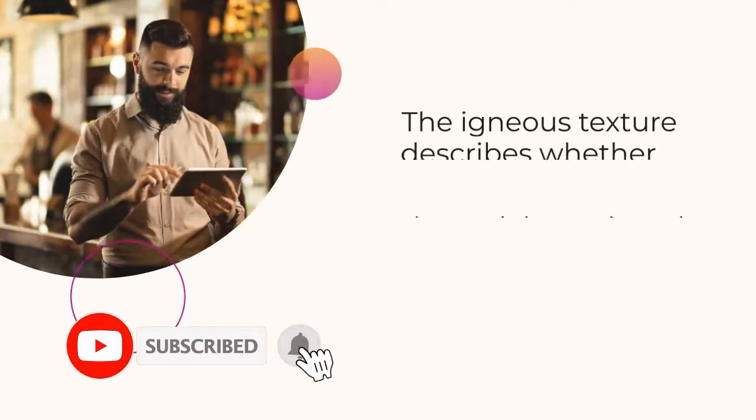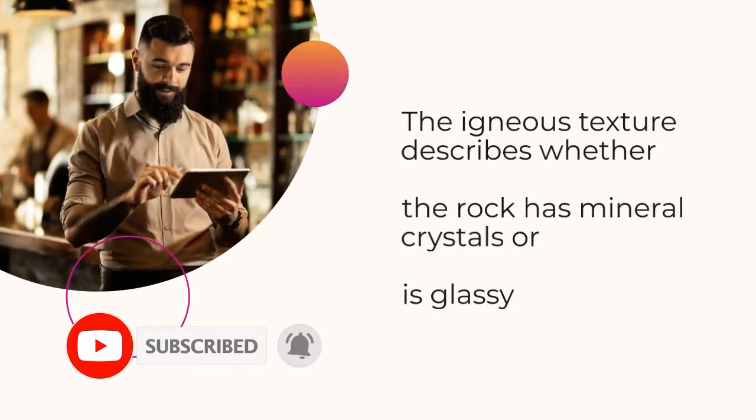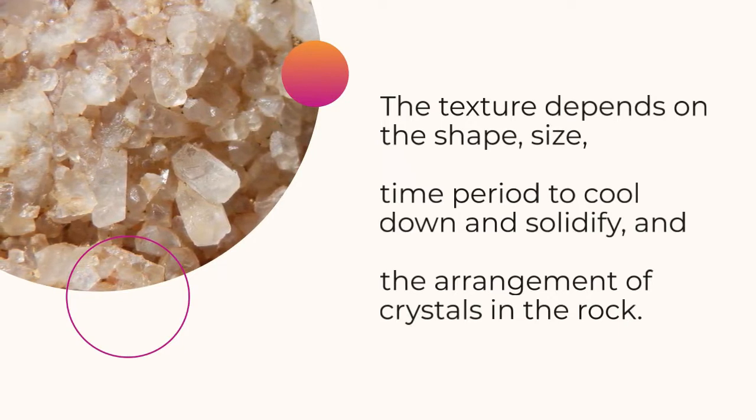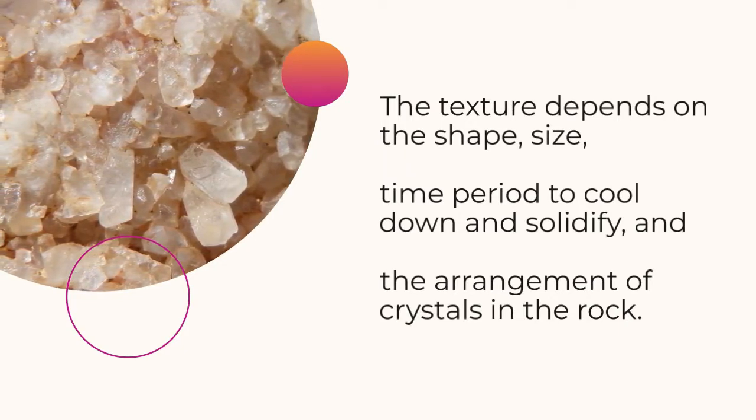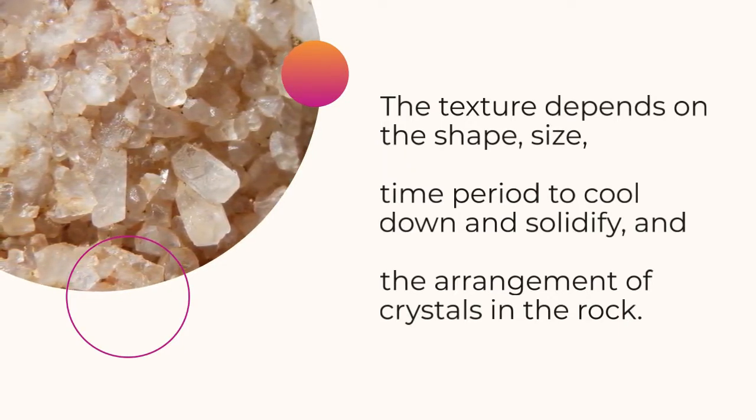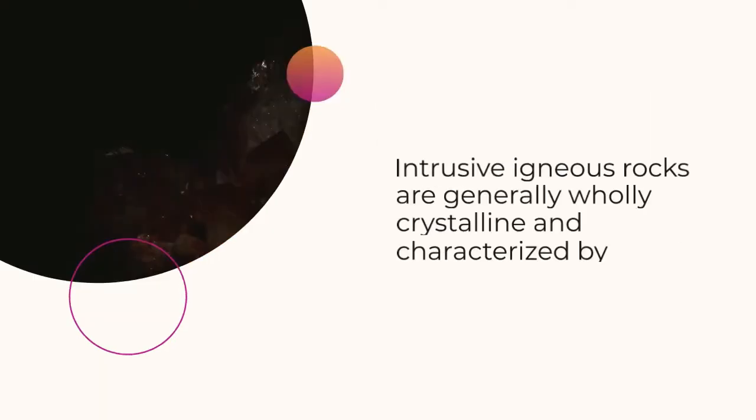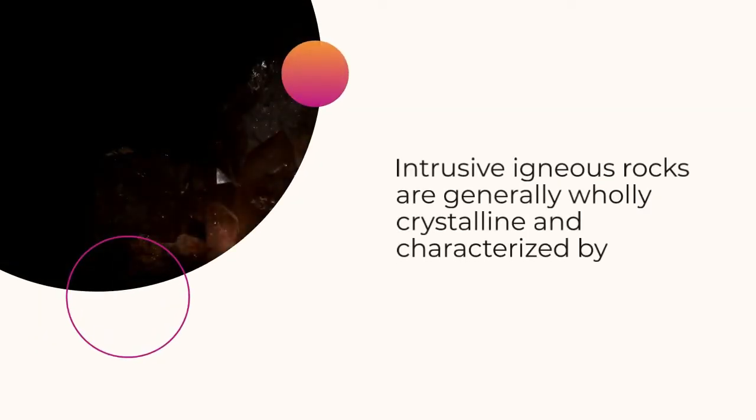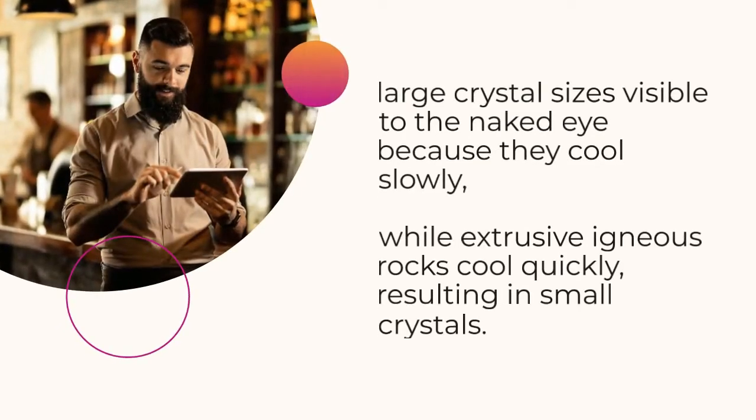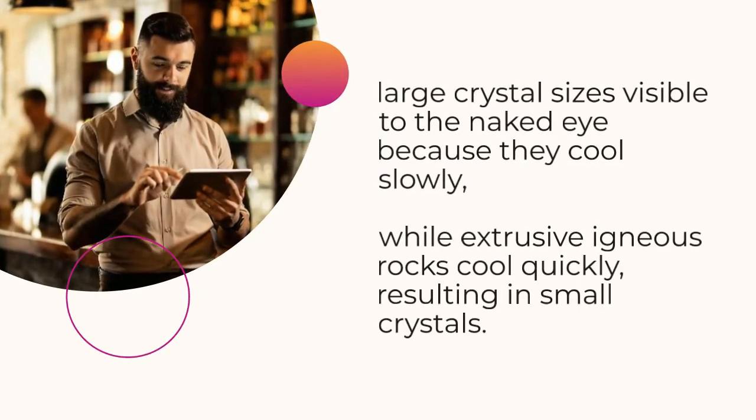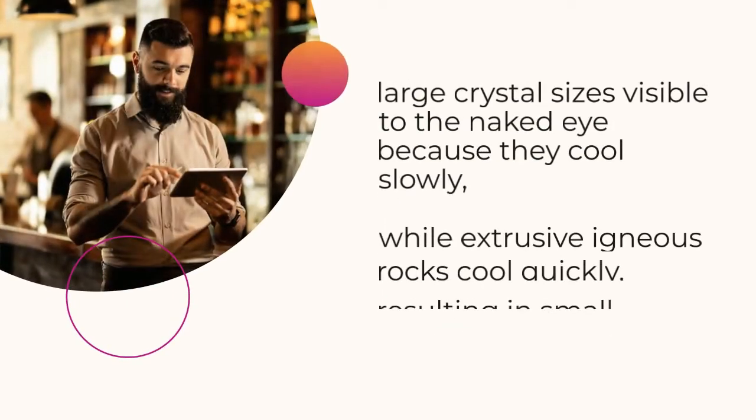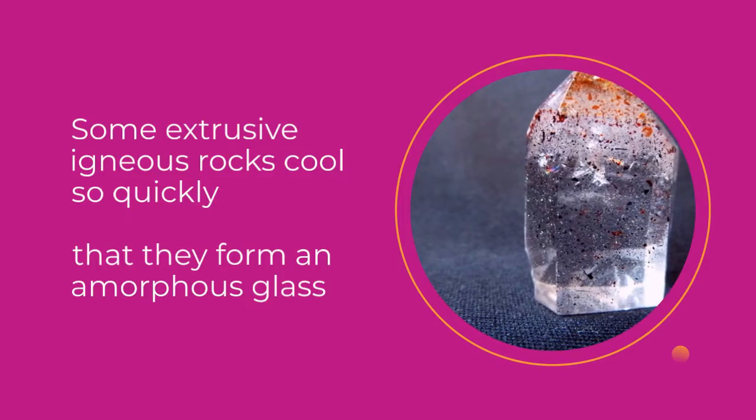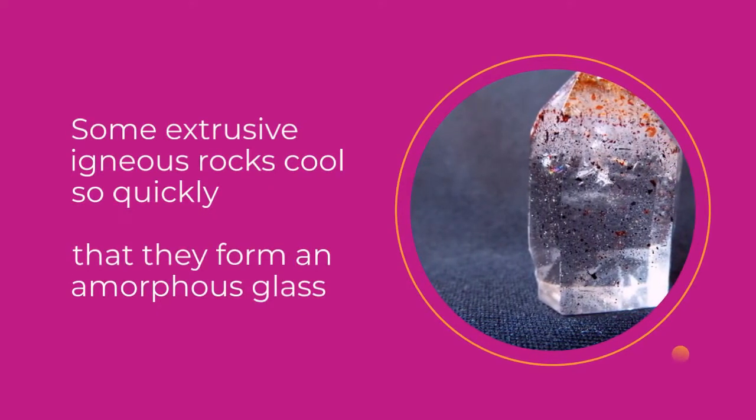Texture. The igneous texture describes whether the rock has mineral crystals or is glassy. The texture depends on the shape, size, time period to cool down and solidify, and the arrangement of crystals in the rock. Intrusive igneous rocks are generally wholly crystalline and characterized by large crystal sizes visible to the naked eye because they cool slowly, while extrusive igneous rocks cool quickly, resulting in small crystals. Some extrusive igneous rocks cool so quickly that they form an amorphous glass.